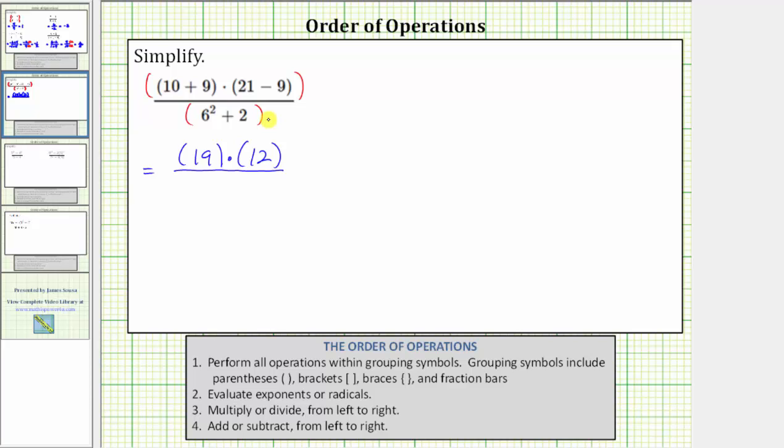And now let's look at the denominator. In the denominator, we have addition and exponents. We simplify the exponents first. 6 squared equals 6 times 6, which equals 36. The denominator simplifies to 36 plus 2.